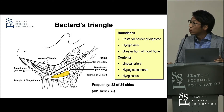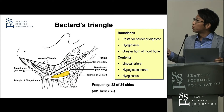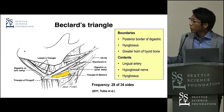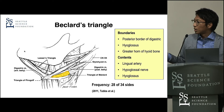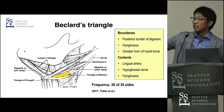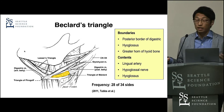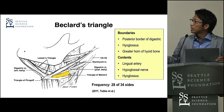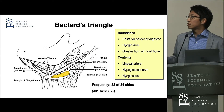The next is Becquart's triangle. Becquart was a French anatomist. This triangle is bounded by the posterior border of the digastric, the hyoglossus muscle, and the greater horn of the hyoid bone. This yellow highlighted area is Becquart's triangle. Its presence depends on the attachment of the digastric muscle. If the attachment is at the posterior part, it is absent. If you find this triangle, it always contains the lingual artery and the hypoglossal nerve. The frequency of this triangle is 28 of 34 sides.